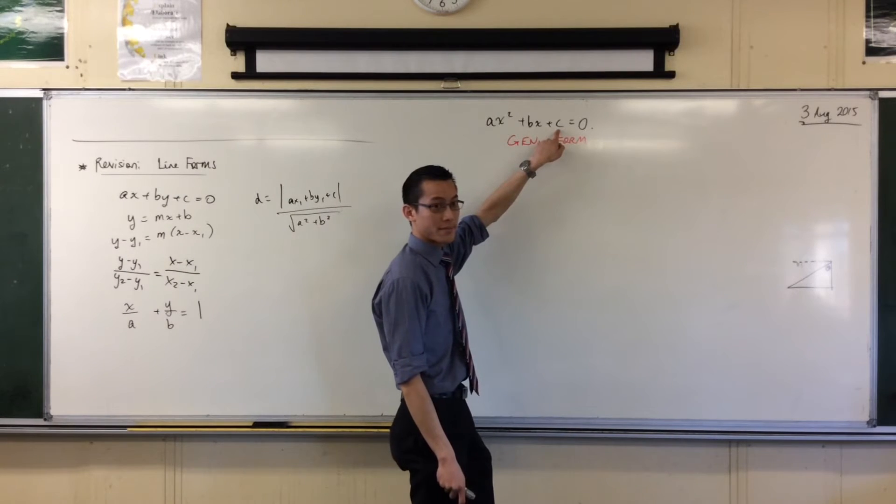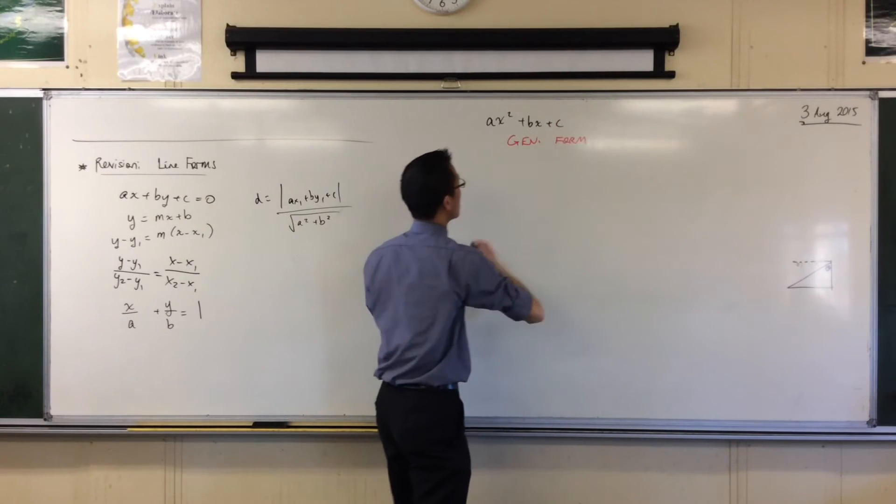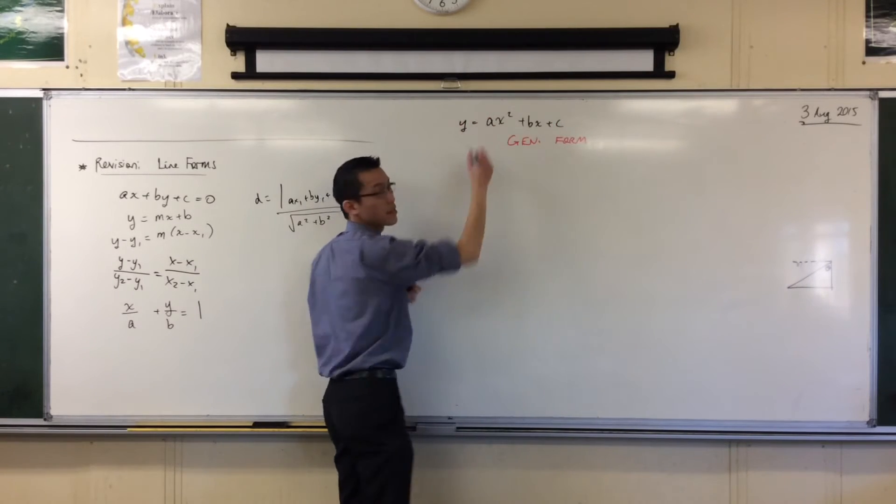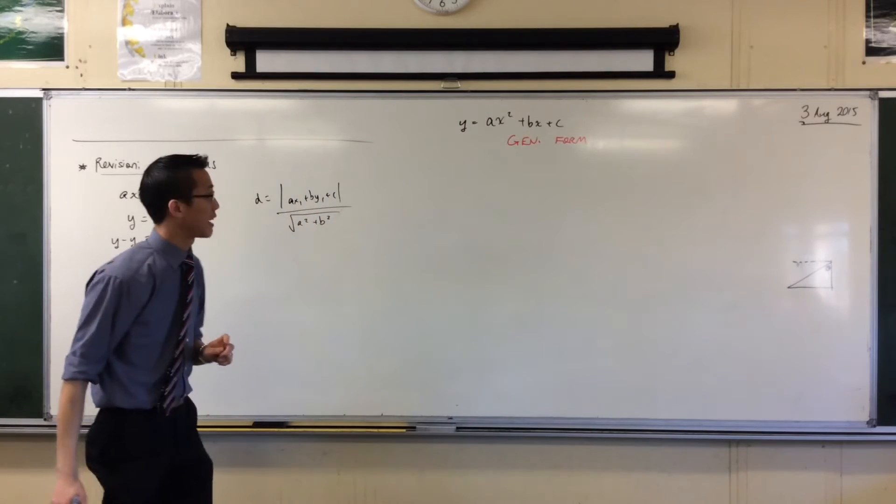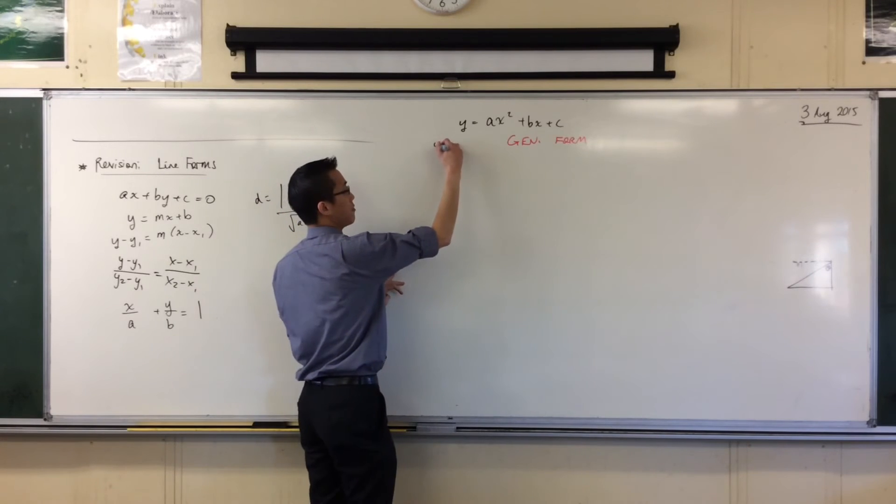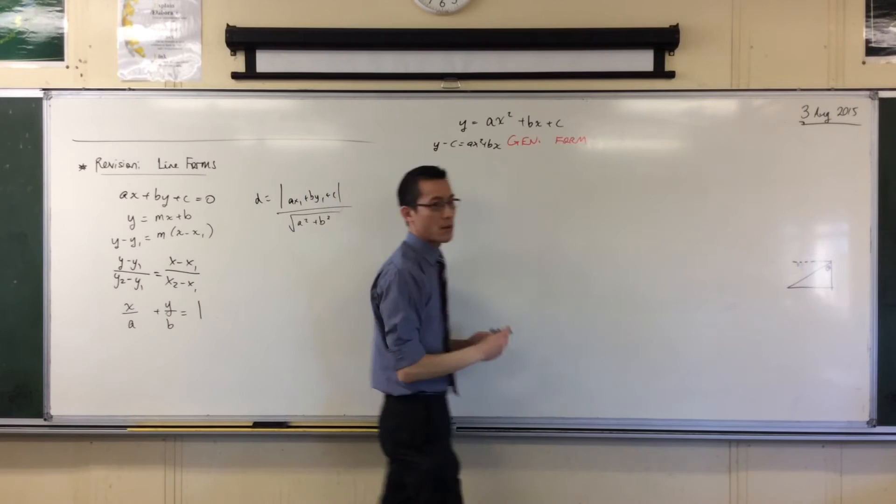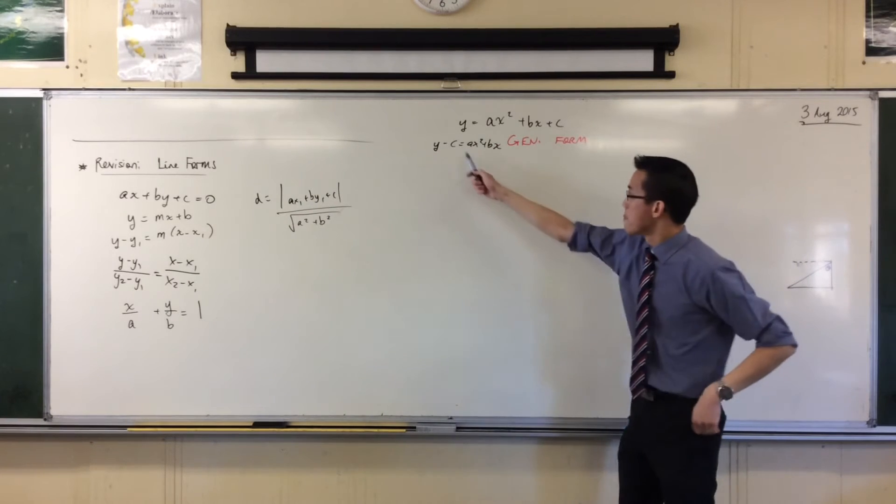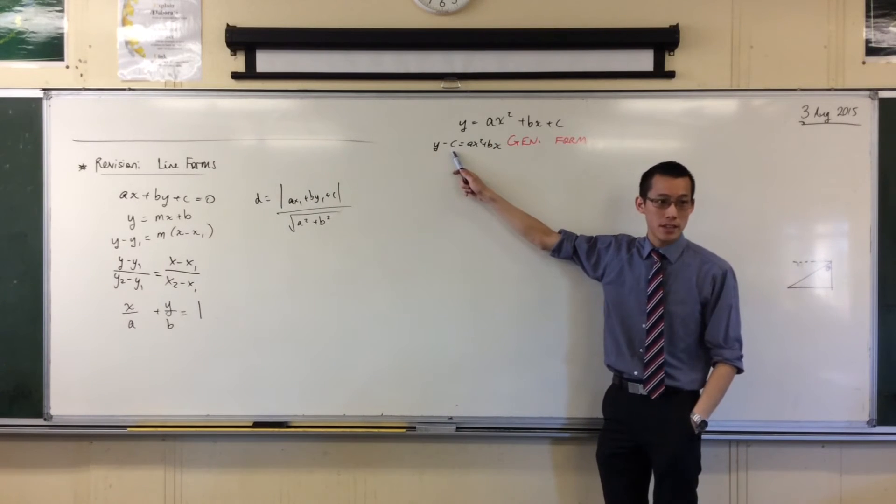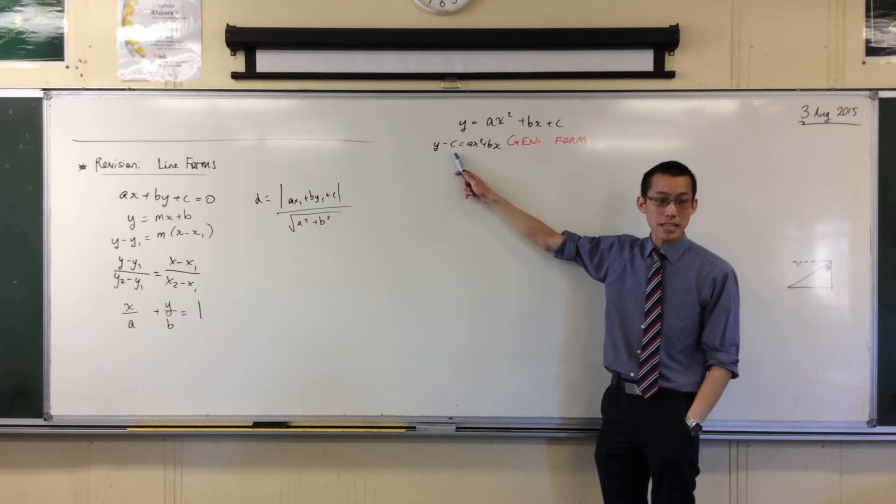When you move the C to that side, does it change sign? Yeah. So, if I say this, if I say that, then really what's going on is, this is my equation of a parabola. So, what you're really saying is this, which we're going to get to in a second. This is shifted which way? Up or down?